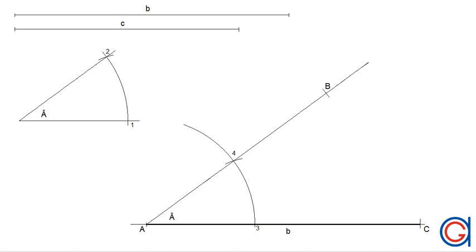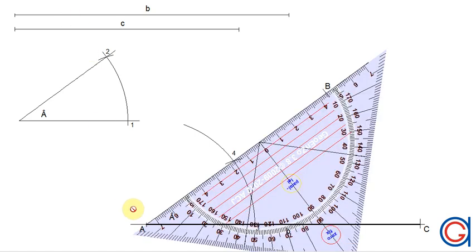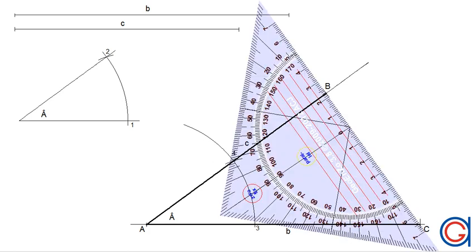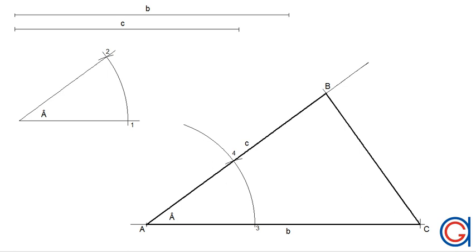Using a thicker pencil, we join vertex A to vertex B, and this will be side C of the scalene triangle, which is opposite angle C. Finally, to complete our scalene triangle, we join vertex C to vertex B, and this will be side A, which is opposite angle A. I hope this video has helped you — please press like or subscribe to our YouTube channel. Until next time, thank you.